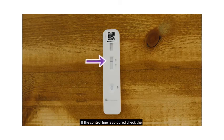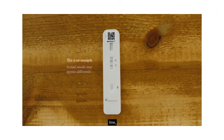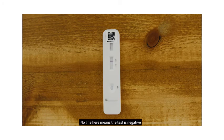If a control line is colored, check the result line of the device marked T. A line shown, even a very faint line, is indicative of a positive test result. No line here means the test is negative.